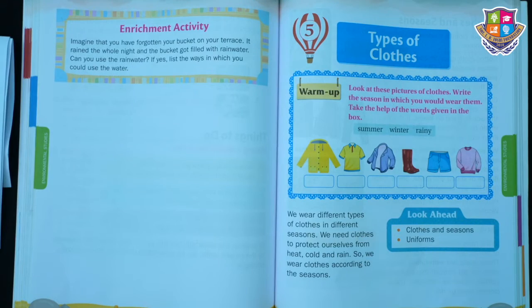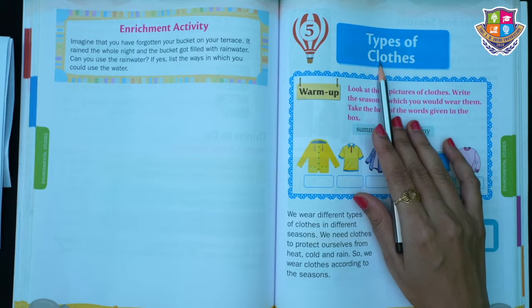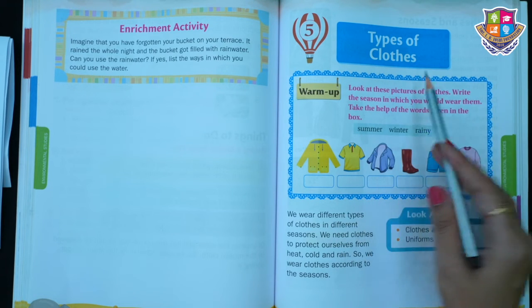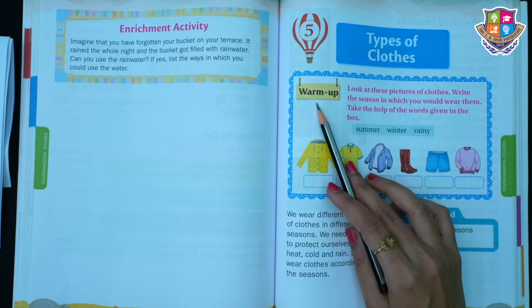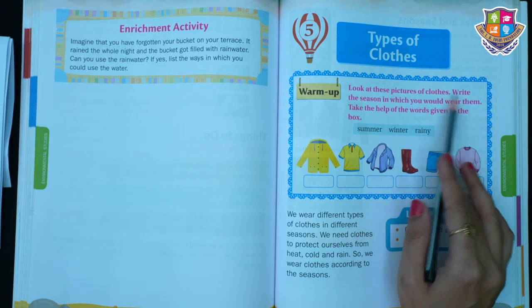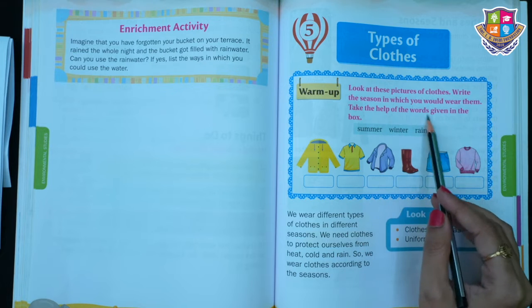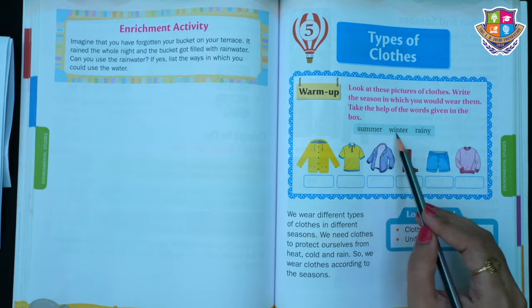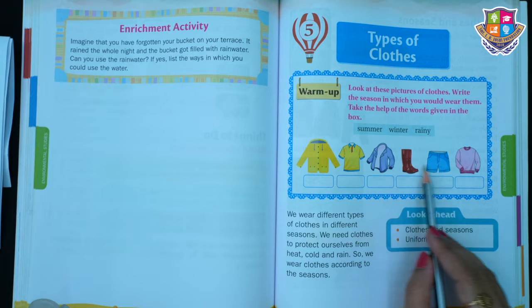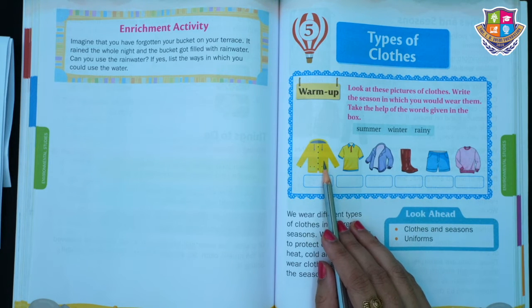Hello students, welcome to my class. Today we are going to see lesson number 5: Types of Clothes. Before starting the lesson, we have a warm-up activity. Look at the pictures of clothes and write the season in which you wear them. Take help from the words given in the box: summer, winter, and rainy. We have to write in which season we use each clothing item.